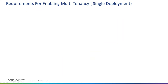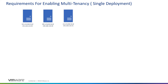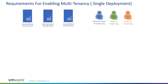Now let's take a look at the requirements for enabling multi-tenancy for a single deployment. In this scenario we have three appliances: LCM, IDM, and VRA. The desired state is to establish our default tenant, which is our provider org, and then two additional tenants — tenant-1 and tenant-2 — representing the tenant orgs. Let's first talk about the DNS requirements.